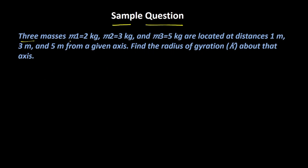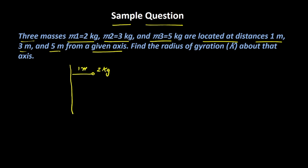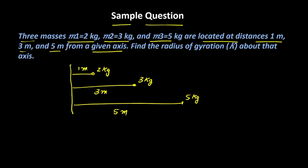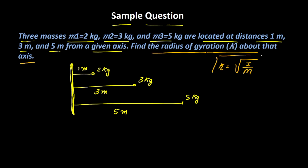Let's try another sample question. Three masses — M1 = 2 kg, M2 = 3 kg, and M3 = 5 kg — are located at distances 1 m, 3 m, and 5 m from a given axis respectively. Find the radius of gyration about that axis. The total mass M = 2 + 3 + 5 = 10 kg.